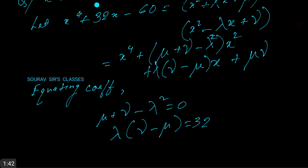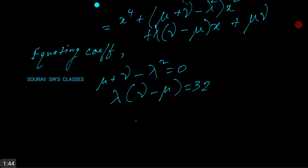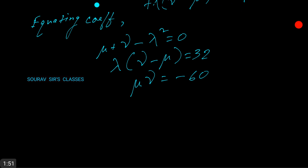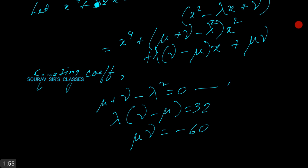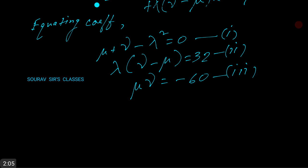Here from these three equations, let's call them 1, 2, 3. From equations 1 and 2, we have mu plus nu is equal to lambda squared, and nu minus mu is equal to 32 by lambda.